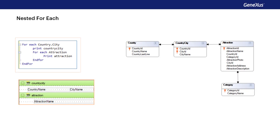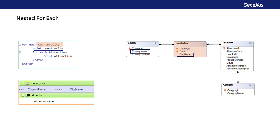In this example, it's done in this order. First, the base table of the external foreach command is determined. To this end, the indicated base transaction is considered — that is to say, country.city — and it's checked whether the attributes included in the print block, country name and city name, belong to its extended table.